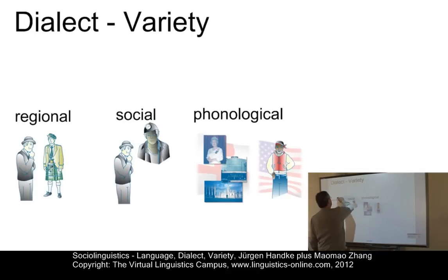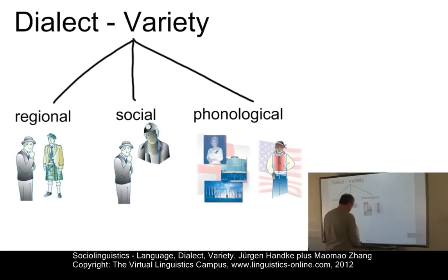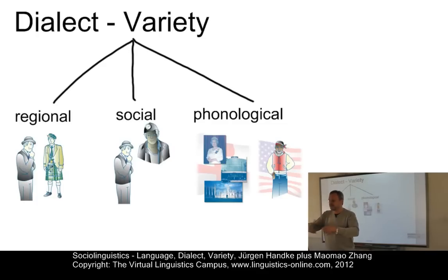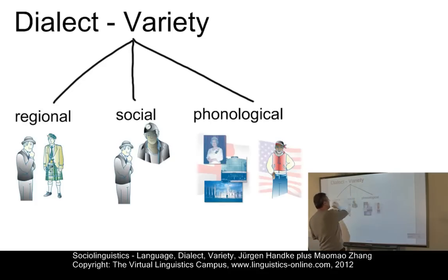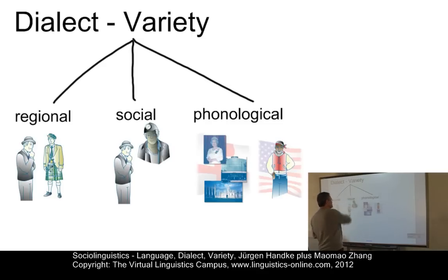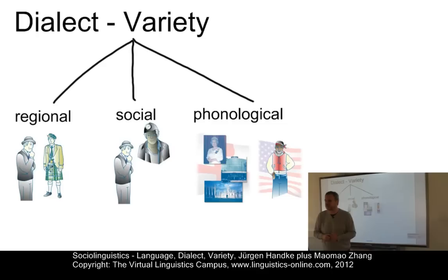In fact, there are three main types of variety or dialect — both terms are used as head terms for several types. We have regional dialects, social dialects, and phonological dialects — or equivalently, regional varieties, social varieties, and phonological varieties.